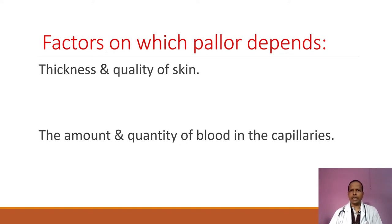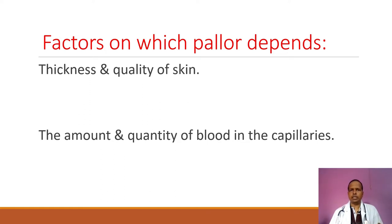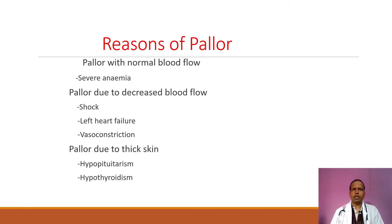Number one is the thickness and quality of skin — pallor may differ from patient to patient based on this. Number two is the amount and quantity of blood in the capillaries. For example, in shock the amount of blood perfusion is less, so pallor will be there. In case of severe anemia, the quantity of blood will be less or the quality of blood will also be defective.